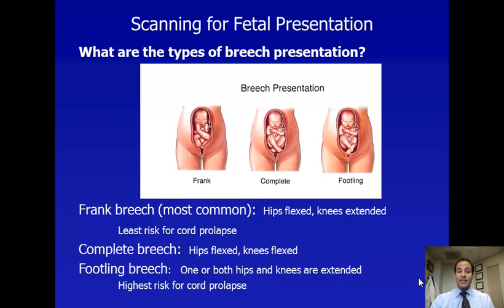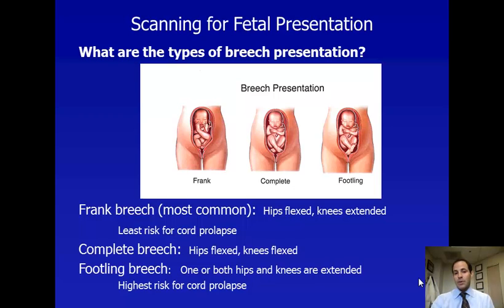These are the types of breech presentation. There are three primary types: Frank, Complete, and Footling Breech. Frank Breech is the most common, and as you can see from the picture on the left of the screen, it is a fetus presenting breech with the hips flexed and the knees extended. The entire breech of the fetus covers the cervical os, with the lower extremities reaching and extending up towards the head.